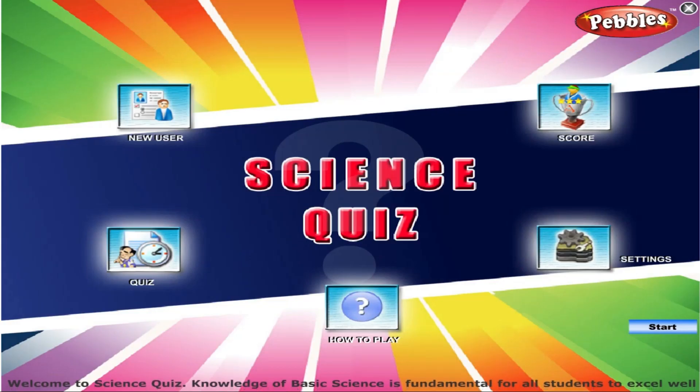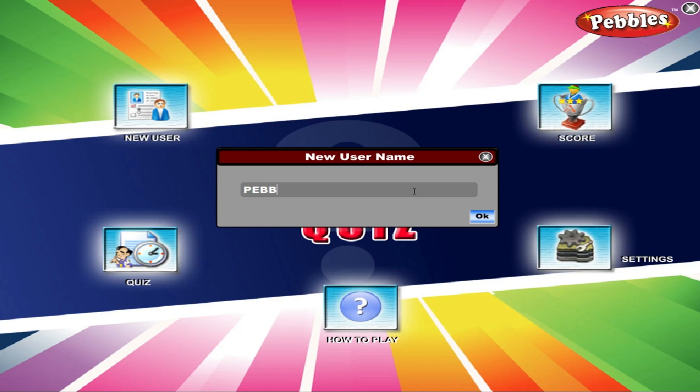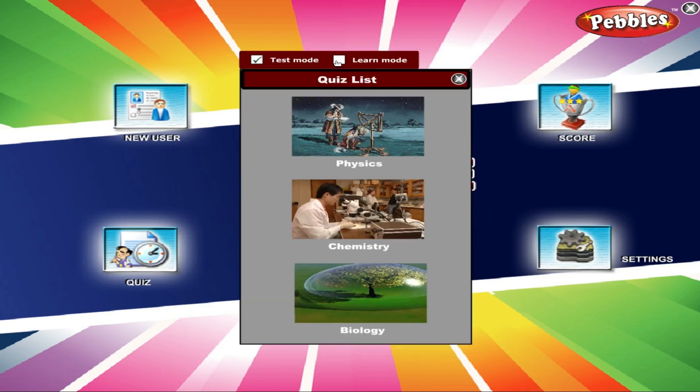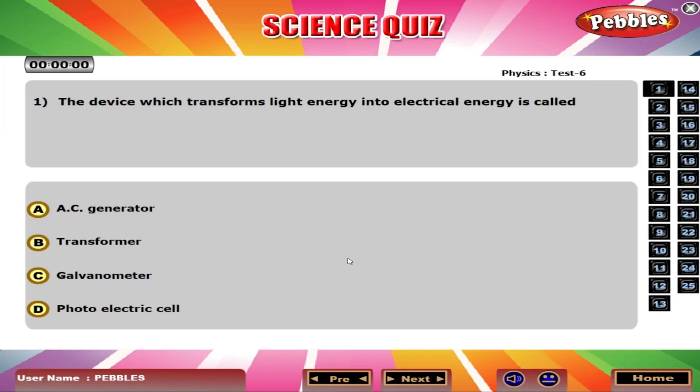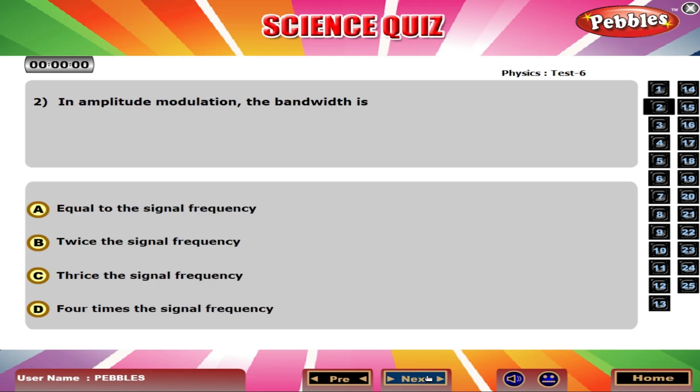Welcome to Science Quiz. The device which transforms light energy into electrical energy is called photoelectric cell. In amplitude modulation the bandwidth is